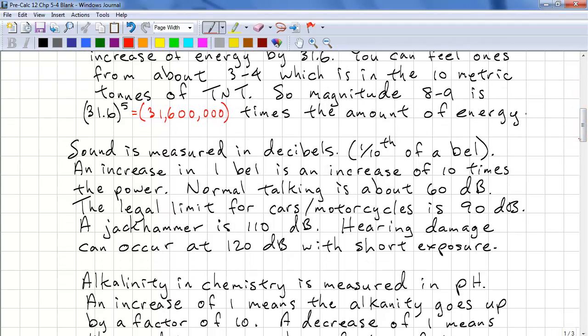Sound is measured in decibels, which is 1 tenth of a bell. An increase of 1 bell is an increase of 10 times the amount of power. Normal talking is at about 60 decibels. And the legal limit for sound for cars and motorcycles is about 90 decibels. A jackhammer is 110 decibels. And hearing damage occurs at 120 decibels given a short amount of exposure time.